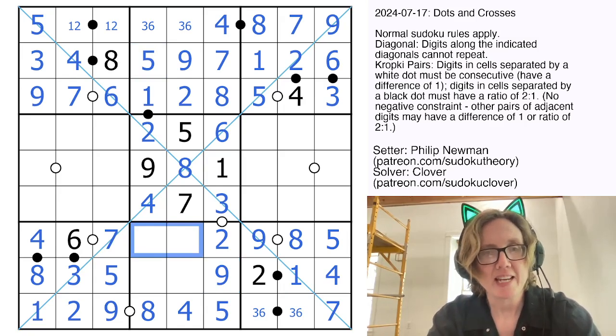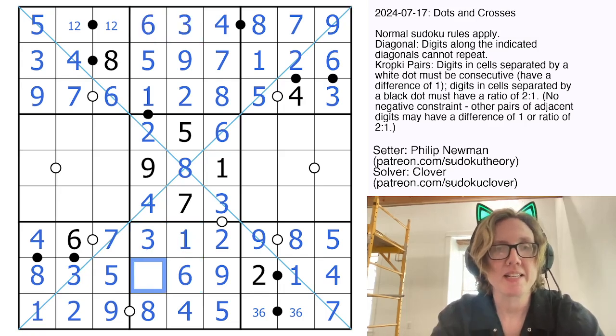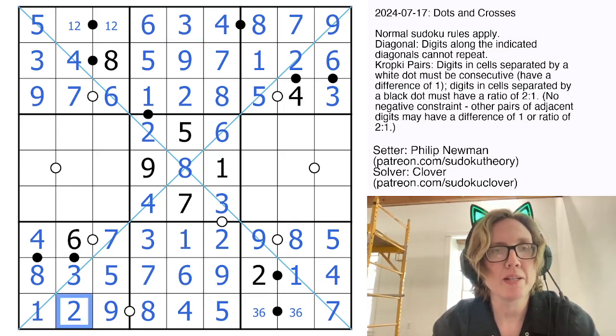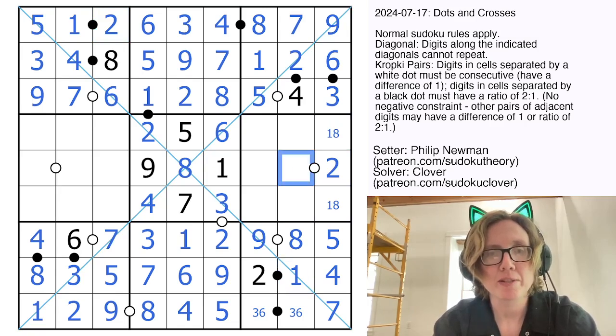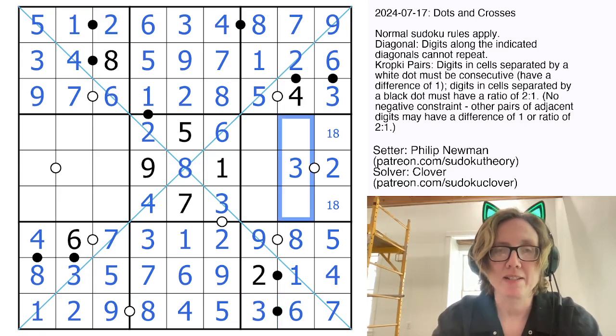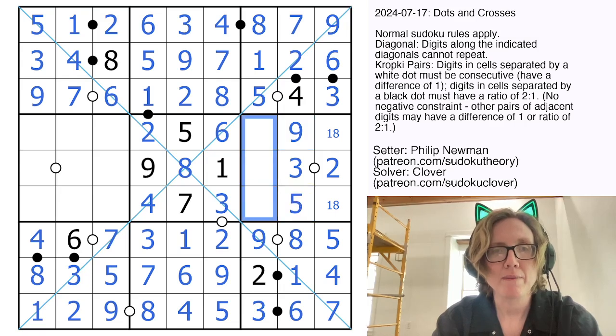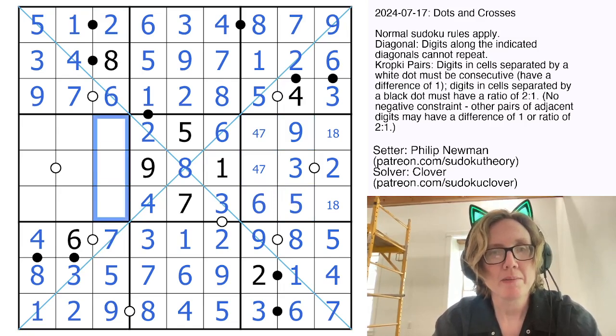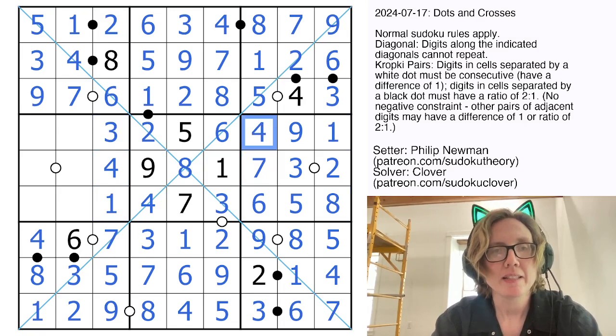This row still needs a 1 and a 3, so we'll place them there and there. This row still needs a 6 and a 7, so we'll place them there and there. My 2 here resolves my 1 and 2. Here I need a 1, a 2, and an 8, which will go like that, and this can't be a 1, so it's a 3, which finally resolves this 6 and 3. My 2 digits here should be 5 and 9, those resolve immediately. These digits will be 4, 6, and 7. These digits in this column are going to be 1, 3, and 4.